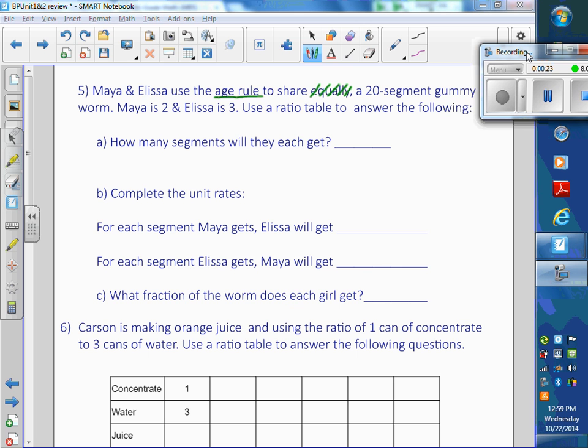Is that what confused you? My mistake. Let's cross that out. But I think, how many people just use the age rule instead? Yeah. Okay. My mistake. So Maya and Alyssa use the age rule to share a 20-segment gummy worm.